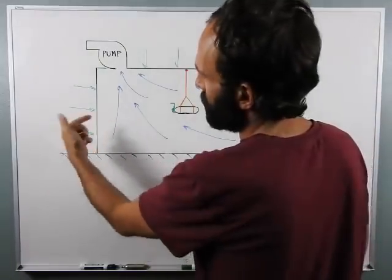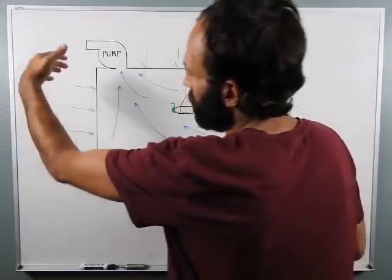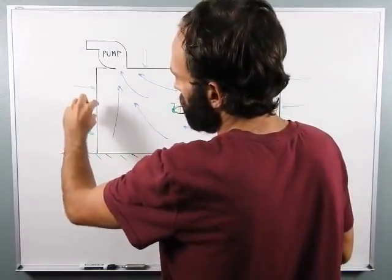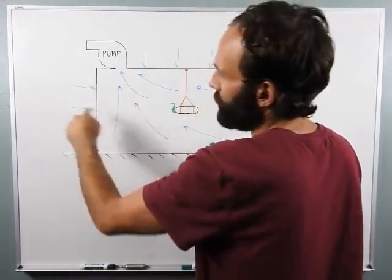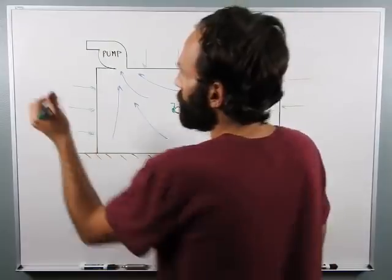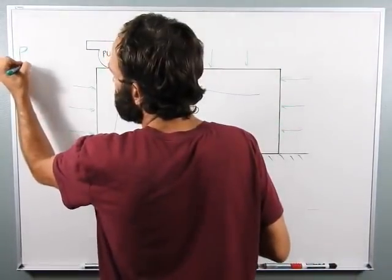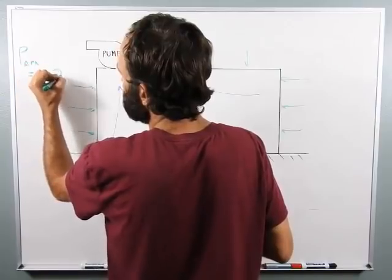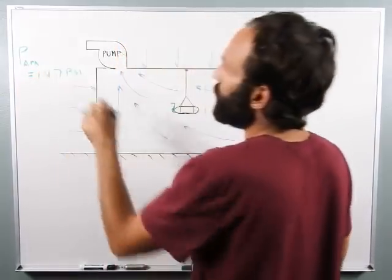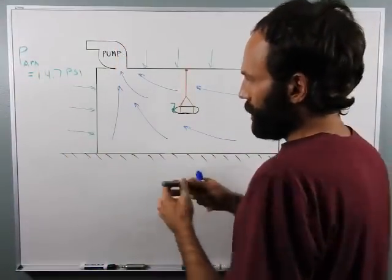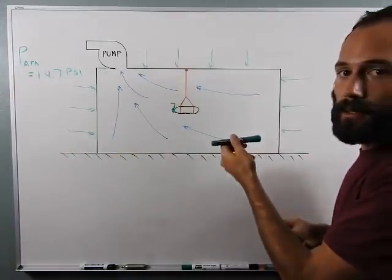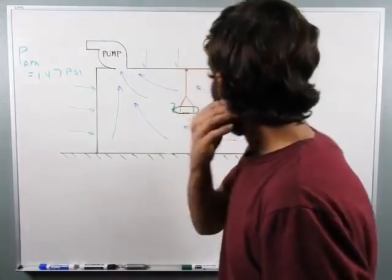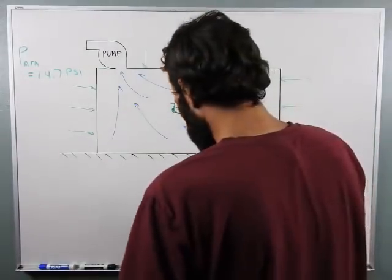So if you were to puncture the side of the tank, the pressure differential would make the, since there's zero pressure in here and out here, the pressure is P atm equals 14.7 psi. Since you have that pressure out there, all the air is going to want to rush into the vacuum chamber. So suck all the air out.